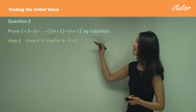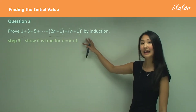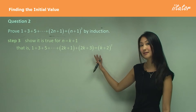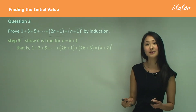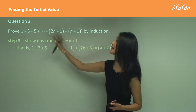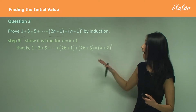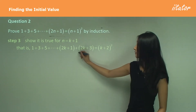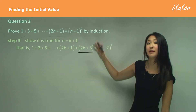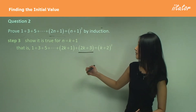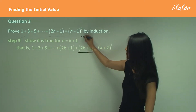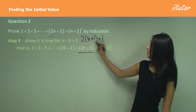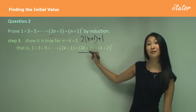Moving on to step 3: we want to show this is true for n equals k plus 1, meaning the left hand side equals the right hand side for k plus 1. On the left hand side we add an extra term, because we're going to k plus 1 — that plus 1 gives the extra term. Substituting k plus 1 into the general formula: 2 times (k plus 1) plus 1 gives 2k plus 2 plus 1, which is 2k plus 3. That's our extra term.